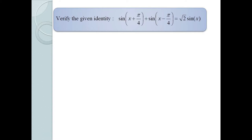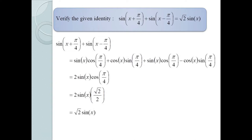What if we were asked to verify the identity sin(x + π/4) + sin(x − π/4) = √2 · sin x? Starting with the left-hand side, we expand using the sine sum and difference formulas to get sin x · cos(π/4) + cos x · sin(π/4) + sin x · cos(π/4) − cos x · sin(π/4). The cos x · sin(π/4) terms cancel, giving 2 sin x · cos(π/4). Since cos(π/4) = √2/2, multiplying by 2 gives √2 · sin x.